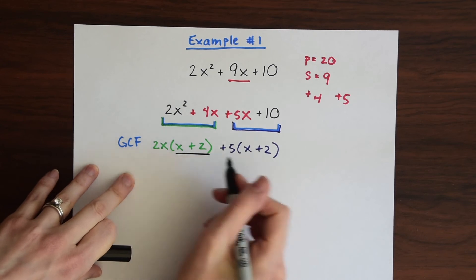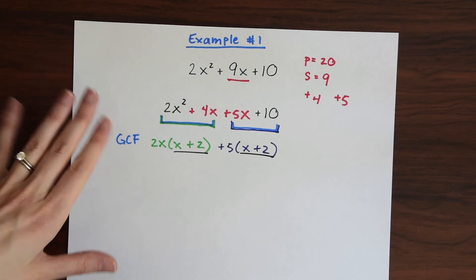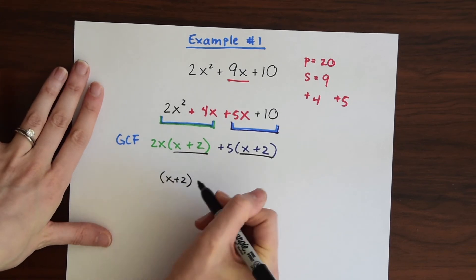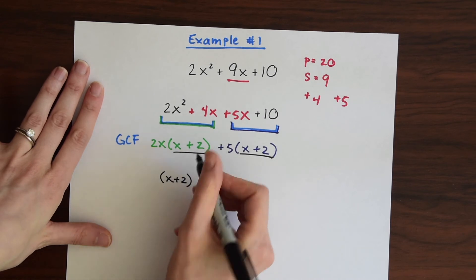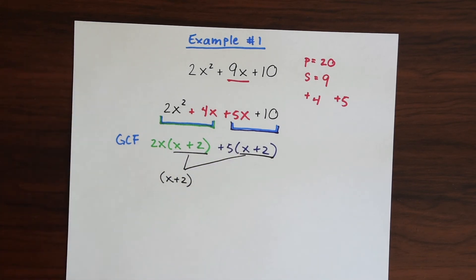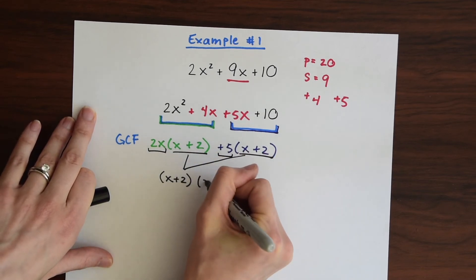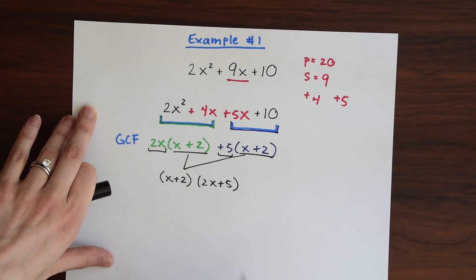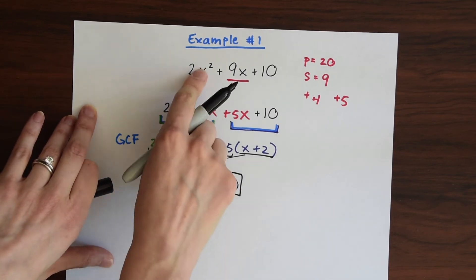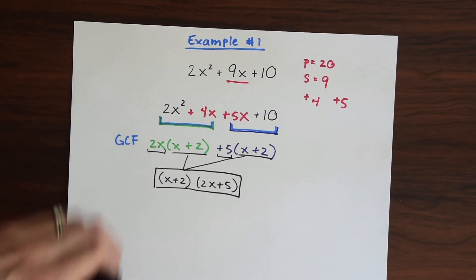So now we're at the point where we're just going to factor this by taking the common factor, which is x plus 2. And then we're going to combine the other two terms — we have 2x and plus 5 — so we just combine those as 2x plus 5. And that's our answer. So we just factored 2x squared plus 9x plus 10 to (x plus 2)(2x plus 5).